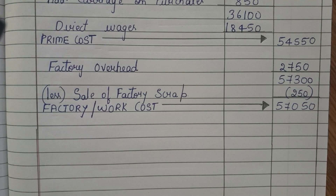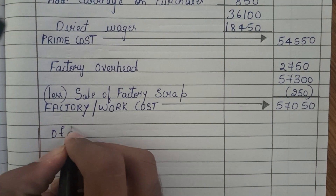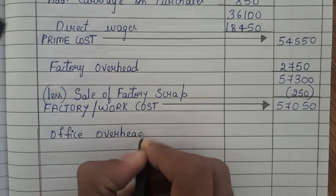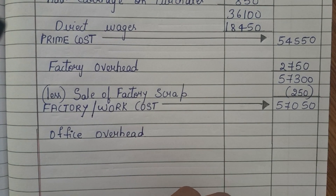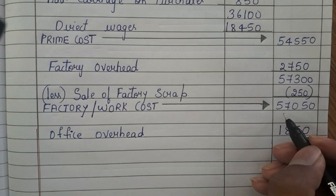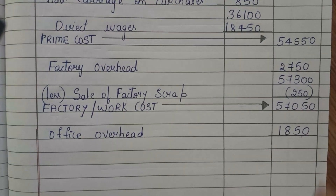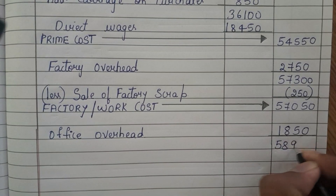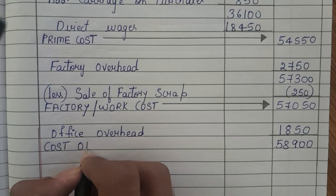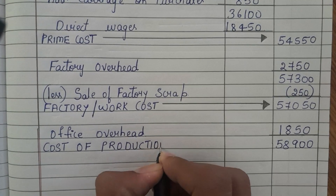The next procedure is to add all the office overheads. In the question, office overheads are directly given as 1,850. Adding 57,050 with 1,850, we get 58,900. This amount is known as cost of production — 58,900 rupees.